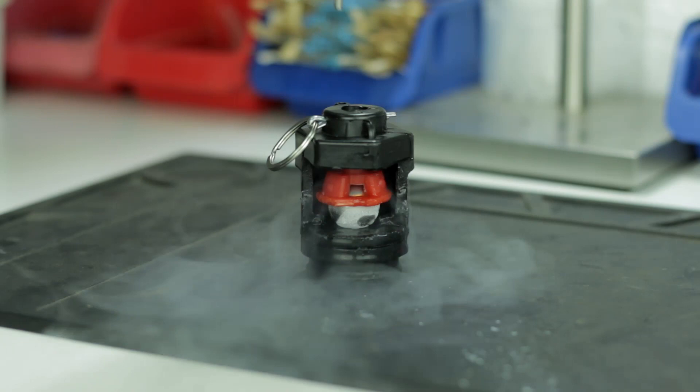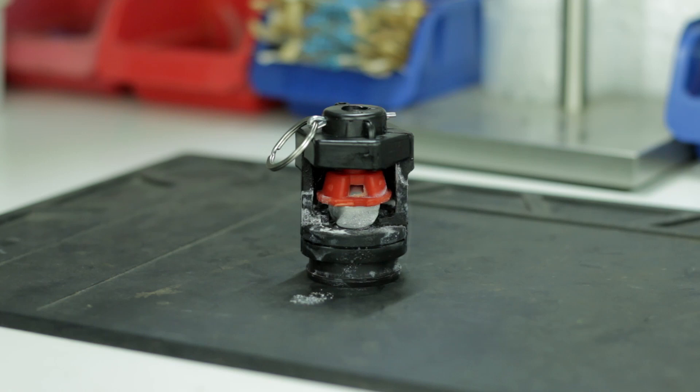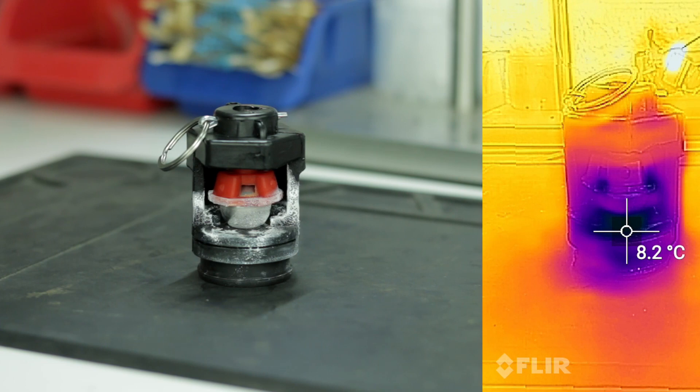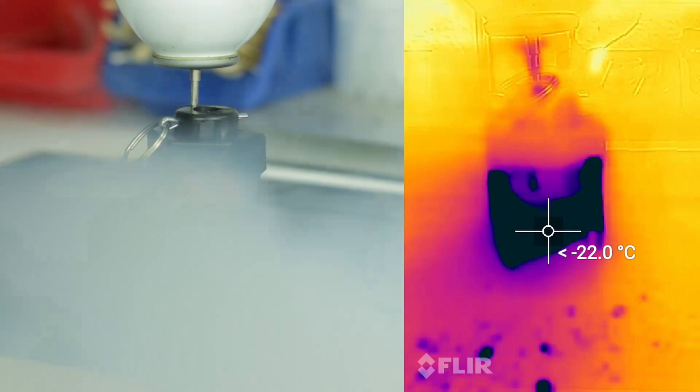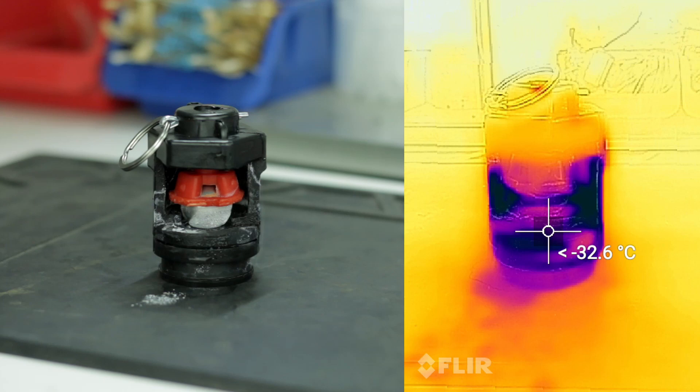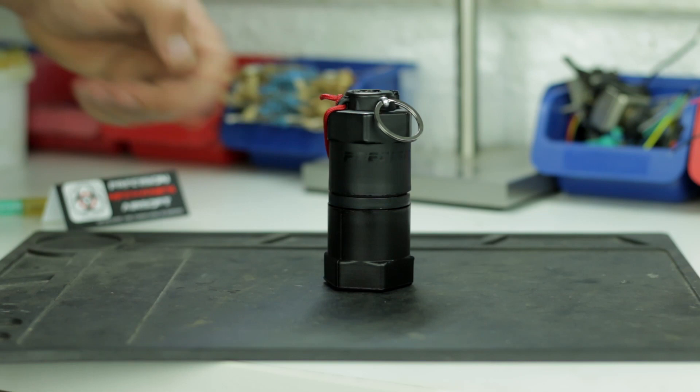This is what happens when you fill the Chimera with gas and the gas expands. As the gas expands, the temperature drops drastically. If you try and use the Chimera now, the seal will be very brittle and you'll have almost no pressure. Check out the temperature in the thermal camera. It immediately goes to minus 44 degrees Celsius. At this temperature, the gas has almost no pressure.